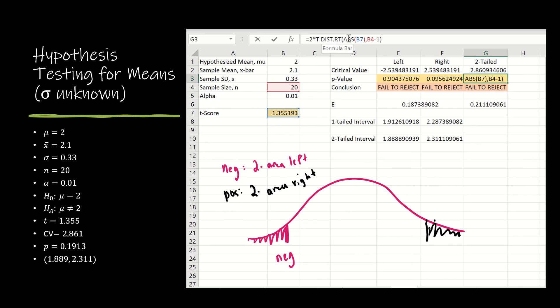So I just use the absolute value to say, no matter what the T score is, I want it to be positive.